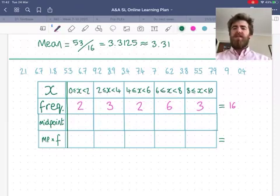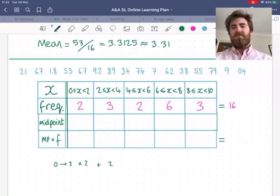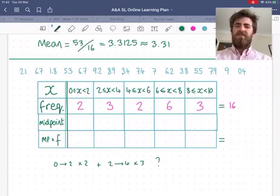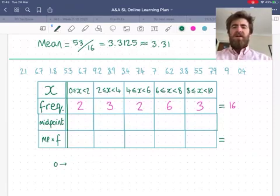So how can I find the mean? Can I do what I did before? Well, before we just did the x value times the frequency and added all those up and then divided. But can you do a range times a number? 0 to 2 times 2? 2 to 4 times 3? No, that doesn't really make sense. You can't do a range times a number. I don't know what that would even equal.